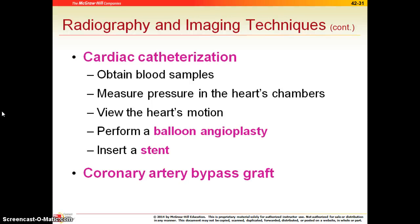A coronary artery bypass graft — often called a 'CABG' or 'cabbage' — is done when a coronary artery becomes totally blocked. They take extra veins from your leg and route around the problem area: one part of the vein is placed above the blockage and one part below, essentially making an extra pathway for blood to flow and supply the heart.